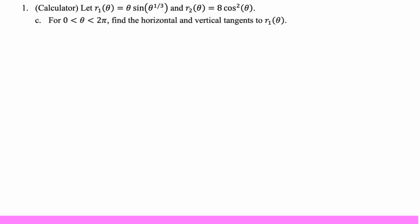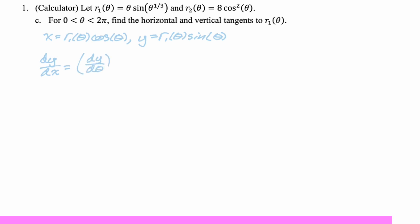For part C, for 0 to 2 pi not including 0 or 2 pi, we want to find the horizontal and vertical tangents to R1. Horizontal and vertical tangents require dy/dx. We're going to rewrite parametrically: x equals R1 times cosine of theta, y equals R1 times sine of theta. Then dy/dx parametrically is dy/d-theta divided by dx/d-theta. To find horizontal tangents, we want dy/dx equals 0; to find vertical tangents, we want dx/d-theta equals 0. I'm switching to the calculator to do the work.